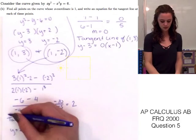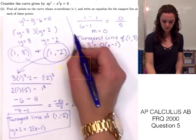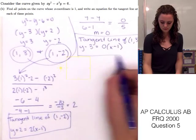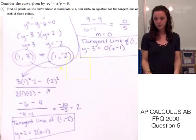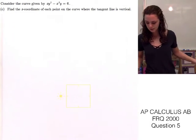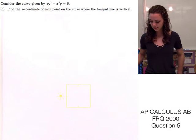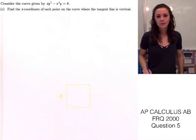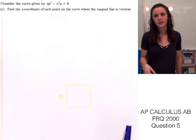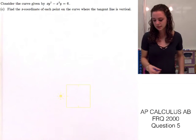Those are your answers for Part B. On to Part C, which asks us to find the x-coordinate of each point on the curve where the tangent line is vertical. We know that when the tangent line is vertical, the slope is undefined, meaning the denominator equals 0.